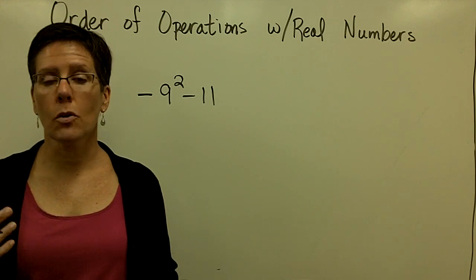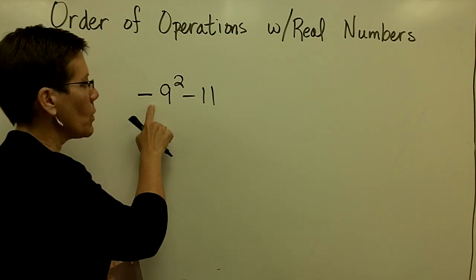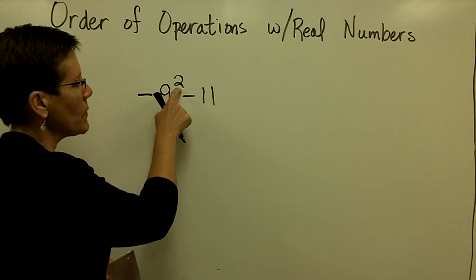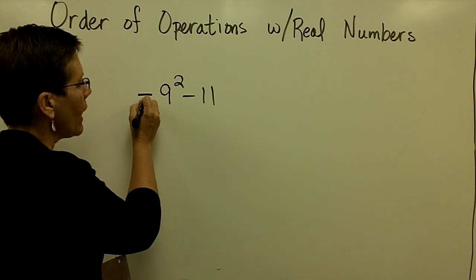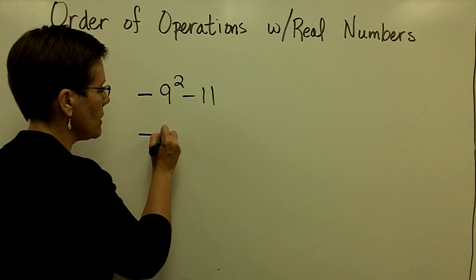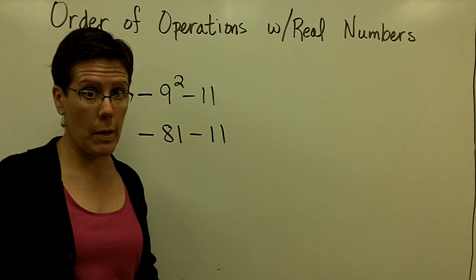Let's continue with a few more problems on order of operations with real numbers. We just did a problem a minute ago where I asked you to take the opposite of something squared. 9 squared is 81, so I would like you to take the opposite of 81 and then subtract 11 in this problem.